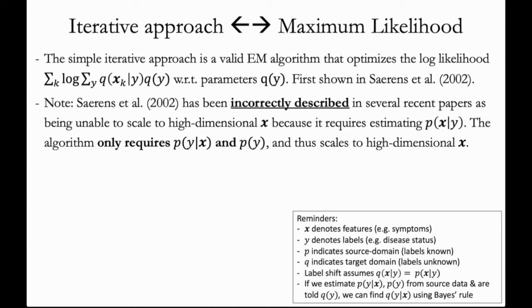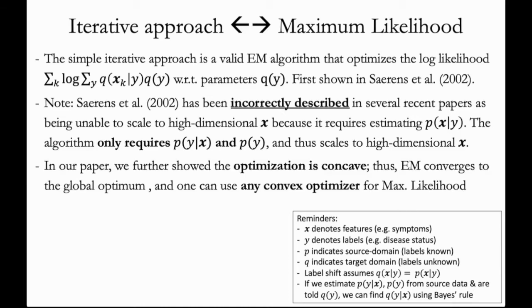However, as you saw with the derivation using Bayes rule, the algorithm actually only requires estimating p(y|x) and p(y). So it can scale to higher dimensional x without any problems. In our paper, we further showed that the optimization is concave, so the EM algorithm converges to the global optimum, and we can use any convex optimizer to get the maximum likelihood estimate. We're not limited to EM.